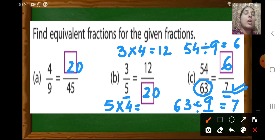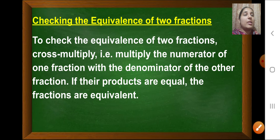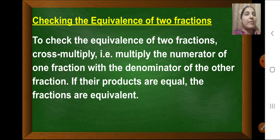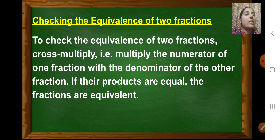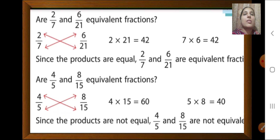You have to look at the question carefully to determine whether to find the equivalent fraction by dividing or by multiplying. Now we will find how to check the equivalence of two fractions. Suppose two fractions are given and you have to find whether they are equivalent or not. To check the equivalence of two fractions, we cross multiply — that is, we multiply the numerator of one fraction by the denominator of the other fraction. Are 2 upon 7 and 6 upon 21 equivalent fractions?